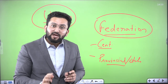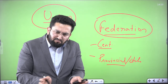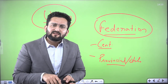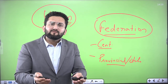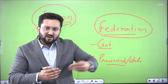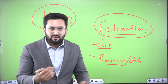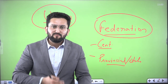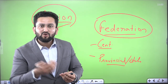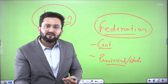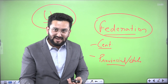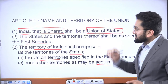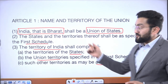India is an indestructible union of destructible states. 'Destructible states' means you can change the boundary of the states. For example, from Uttar Pradesh we carved out Uttarakhand, from Madhya Pradesh we carved out Chhattisgarh, and from Bihar we carved out Jharkhand. I hope this debate and the use of the word 'Union' is now clear to you.